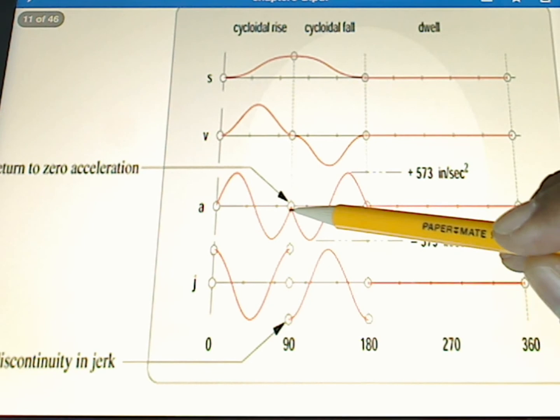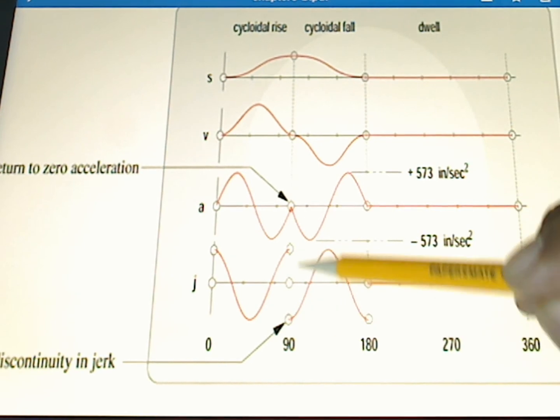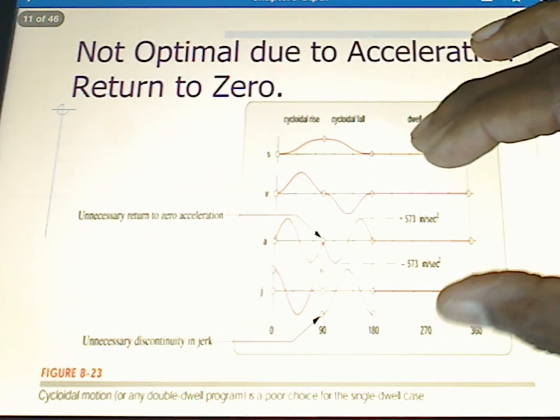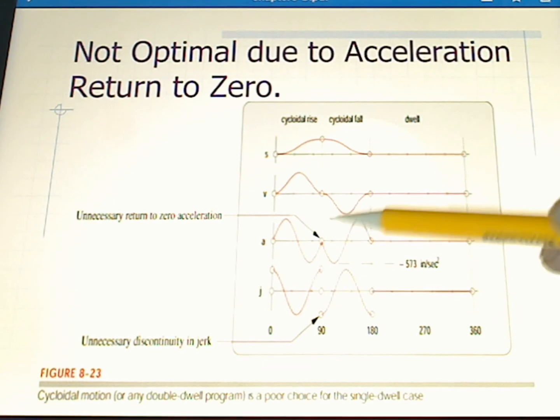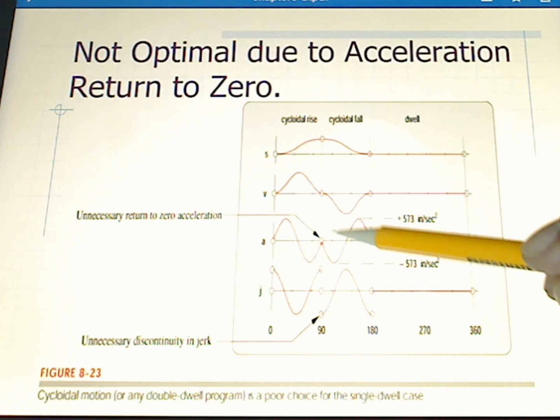And you can see that because of this we end up with a discontinuity here in our jerk profile. So it's not an optimal set of results for this particular design, mainly because of what we see here with the acceleration.